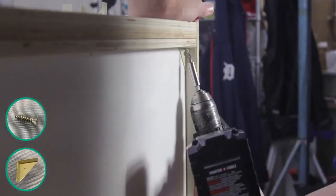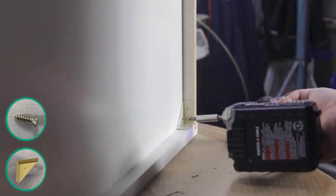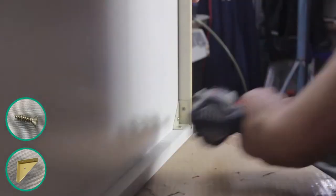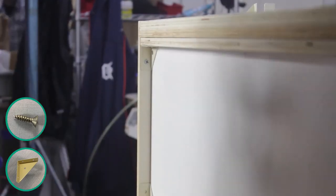Now place a corner bracket into each corner of the top and bottom to firmly secure the cabinet together. Each bracket will be fastened down using three screws.